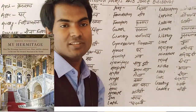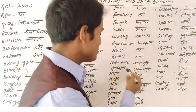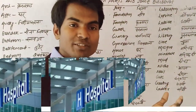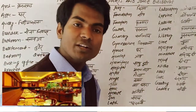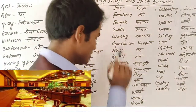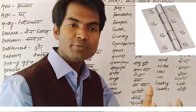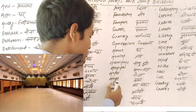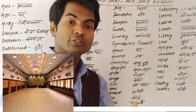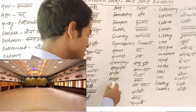Hermitage — hermitage ka matlab hota hai 'sadhu kuti,' jahan pe sadhu sant log rehte hain. Hospital — where patients are admitted to take treatment. Hotel — hotel ka matlab hota hai hotel. Hinge — hinge ka matlab kya hota hai: 'kabza,' and kabza is one type of instrument used in making buildings. Hall — hall ka matlab hota hai bahut bada kamra. Har ghar mein ek hall bana jata hai jahan pe bahut saare log ekath hote hain.